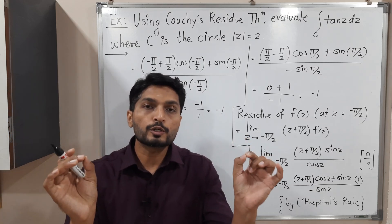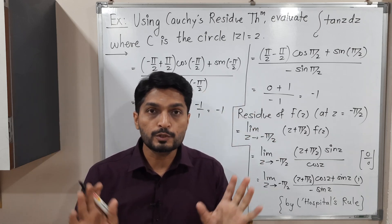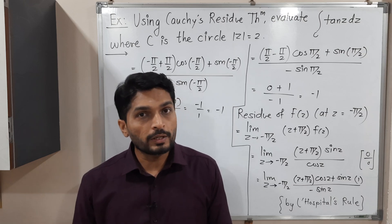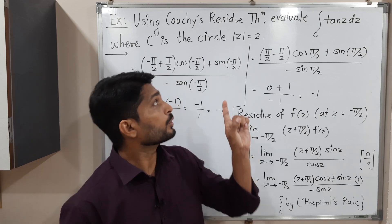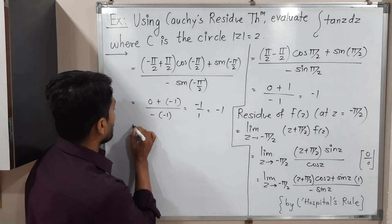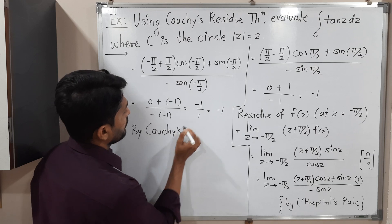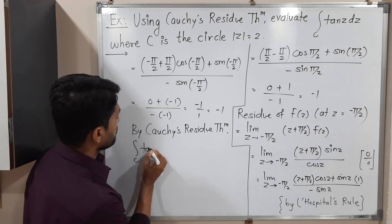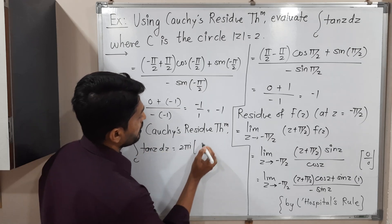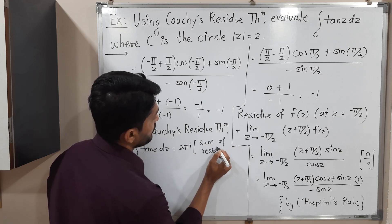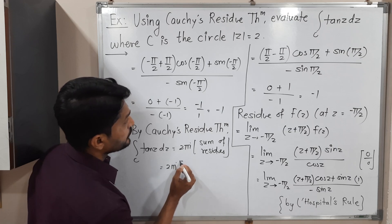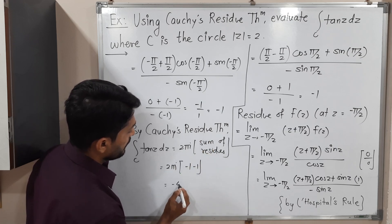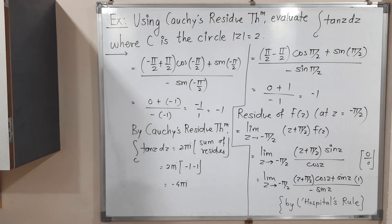We have two singular points inside C with residues both equal to −1. By Cauchy's residue theorem: ∮_C tan(z) dz = 2πi × (sum of residues) = 2πi × (−1 + (−1)) = 2πi × (−2) = −4πi. This is the required answer. Thank you, see you in the next video.